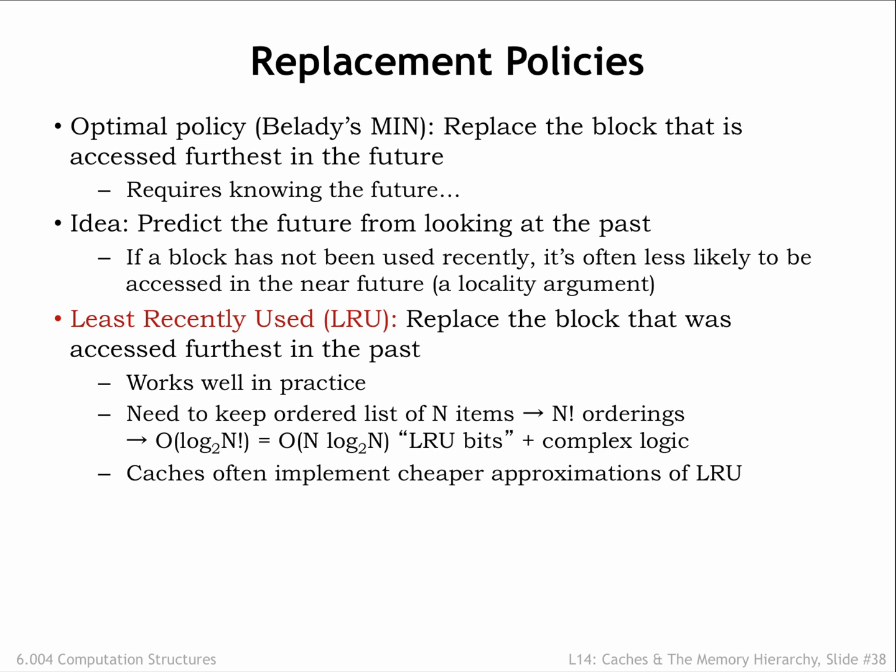For an 8-way set associative cache there are 8! possible orderings, so we'd need log base 2 of 8!, or 16 state bits to encode the current ordering. The logic to update these state bits on each access isn't cheap — basically you need a lookup table to map the current 16-bit value to the next 16-bit value. So most caches implement an approximation to LRU where the update function is much simpler to compute.